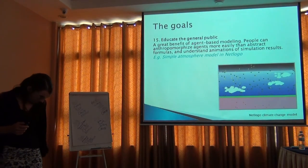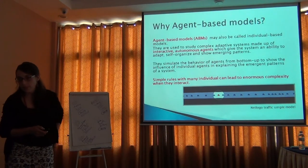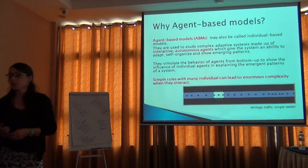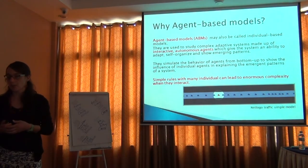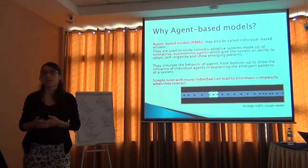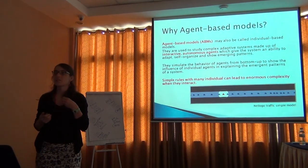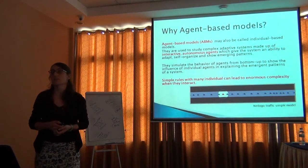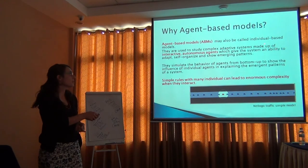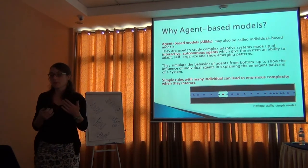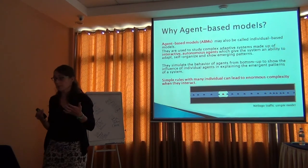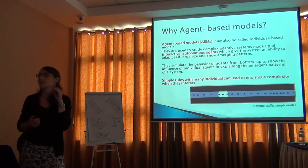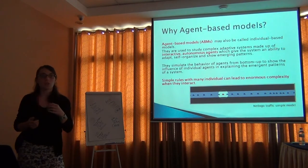I want to discuss agent-based models, because there are many types of modeling out there and I think agent-based models are very useful. Humans are easy to think of as agents. Agent-based modeling is also called individual-based modeling. Agents could be animals moving around or other entities. The idea is that we can set a few rules to determine how these agents are going to behave.